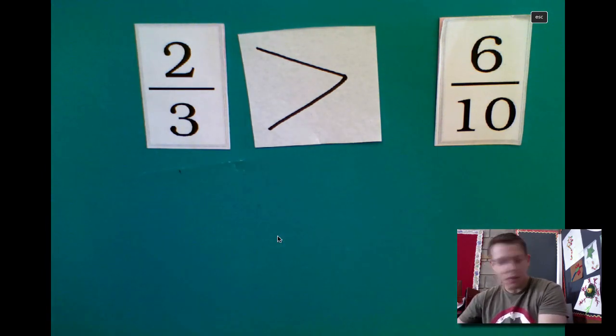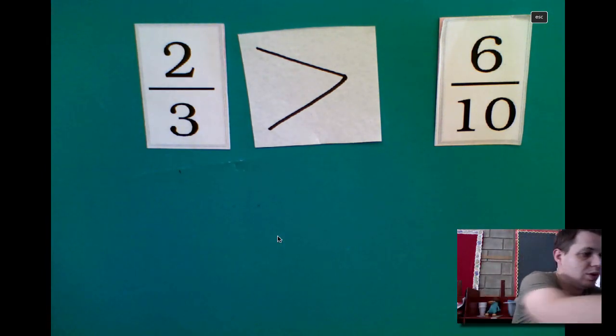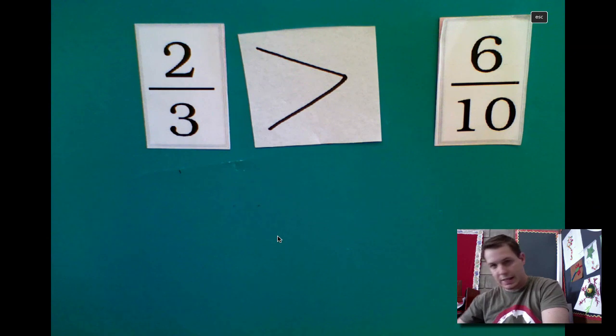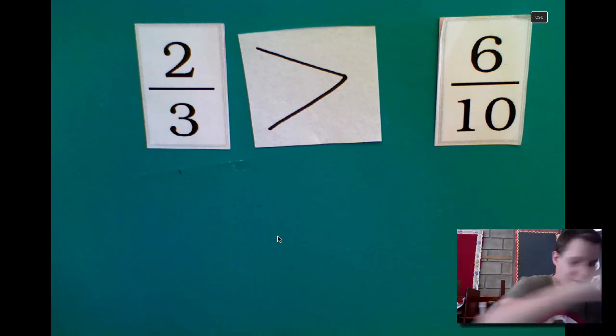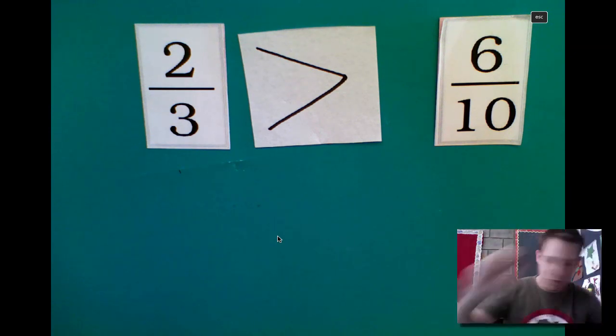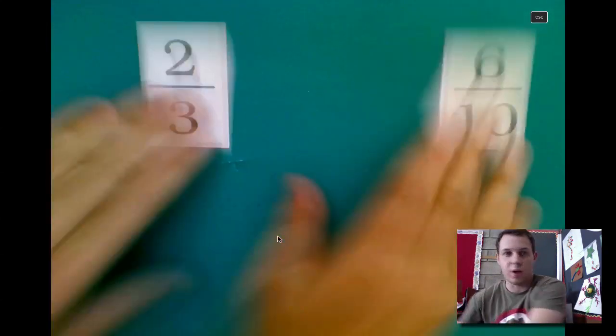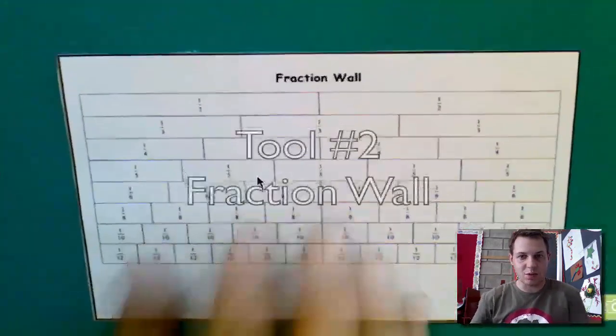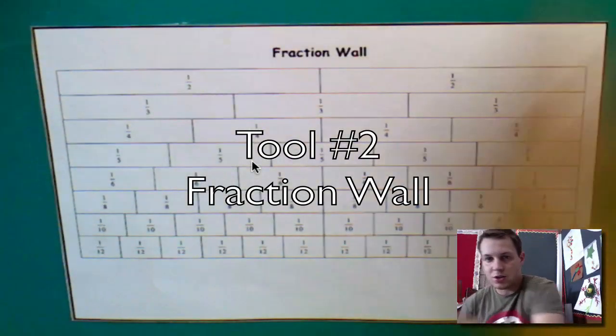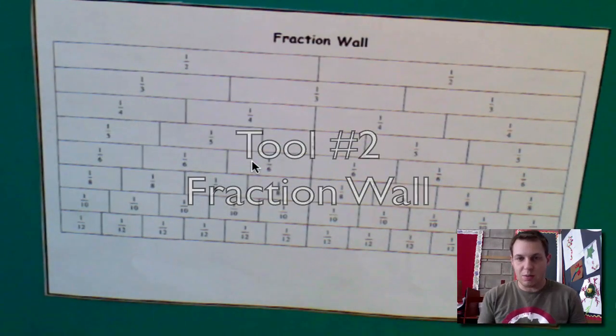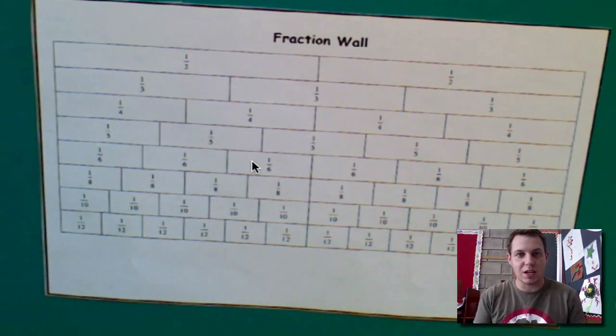Now, you might have these little toys in school, but maybe you do not have them at home. No fear, there is another way to compare these. You might have something that looks like this, which is called a fraction wall. The fraction wall is kind of like what we just saw, except you can't take it apart.